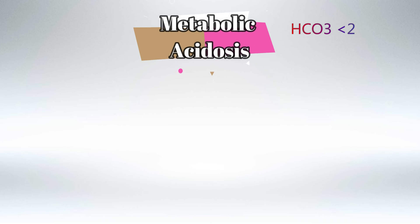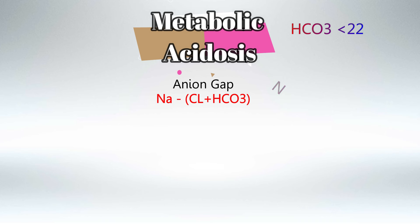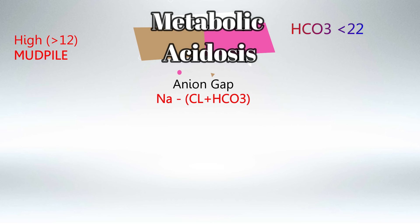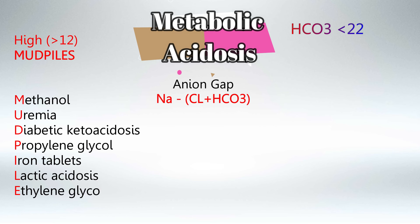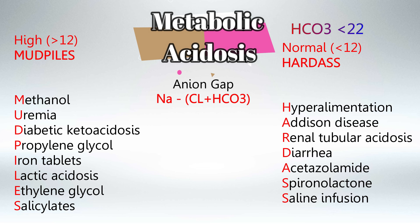Metabolic acidosis is defined as bicarbonate less than 22. We subdivide metabolic acidosis into two parts: either high anion gap or normal anion gap. To calculate anion gap, calculate sodium minus chloride plus bicarbonate. If the result is more than 12, this is high anion gap, and we can remember those scenarios using the mnemonic MUD PILES. If the result is less than 12, this is a normal anion gap, remembered using the mnemonic HARD S.